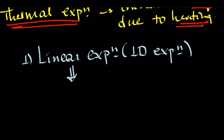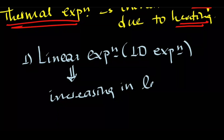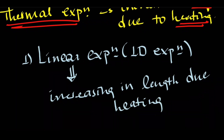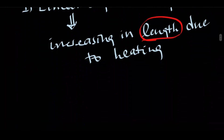Linear expansion refers to the increase in length due to heating. It is an increase in one dimension — that is, along the length of the object. Linear expansion means the object expands in one dimension, specifically in its length.